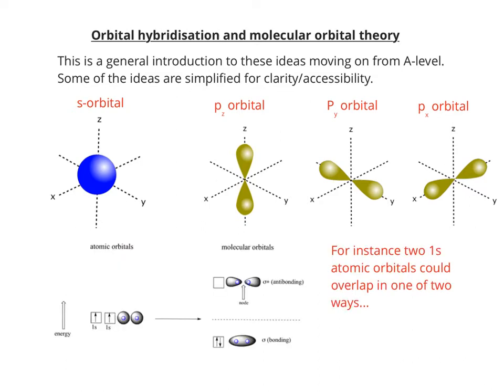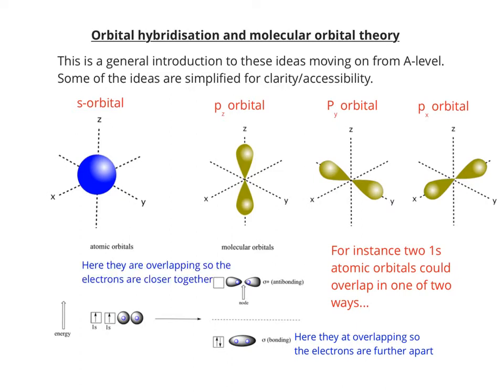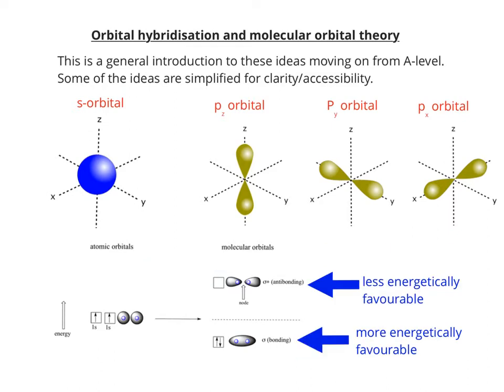If we take two 1s atomic orbitals and overlap them — hydrogen, for example — you can get one of two possible ways in which they could overlap. In the bottom part of the picture, the orbitals are overlapping so the electrons are further apart, whereas at the top they're overlapping so the electrons are closer together. So in an anti-bonding orbital, this is a less energetically favourable arrangement, whereas in a bonding orbital, it's a more energetically favourable arrangement.